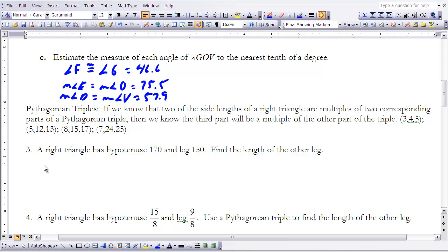It's kind of a hard concept, but let's just take a look at number 3, and I think you'll kind of get an idea of what we're talking about here. It says a right triangle has a hypotenuse of 170 and a leg of 150. Find the length of the other leg. Well, here's the way I'm going to think about that. I'm looking at this Pythagorean triple right here where we have 8, 15, and 17, and you'll notice that one of the legs is 10 times 15, the other one is 10 times 17.